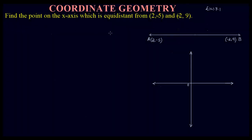Hello everyone, welcome to my channel NCRT Mathematics Learning Hub. In this video I am going to discuss the seventh question of exercise 7.1. The question says: find the point on the x-axis which is equidistant from two given points. Equidistant means at equal distance from both points, and the point we need lies on the x-axis.